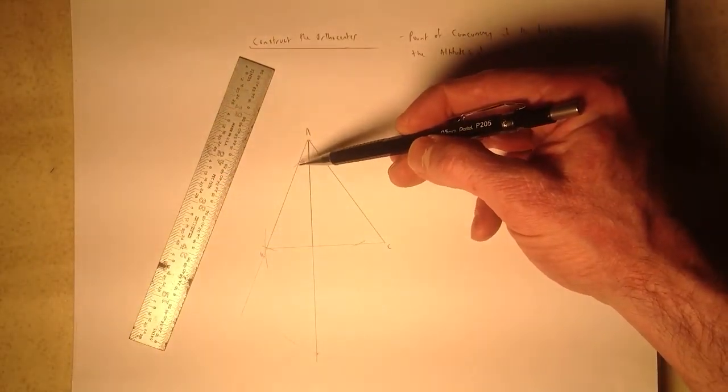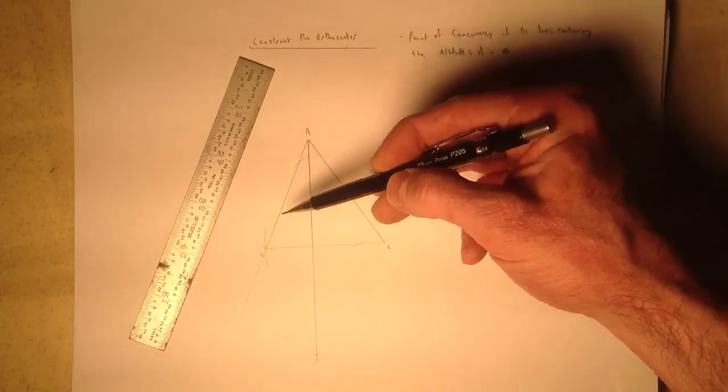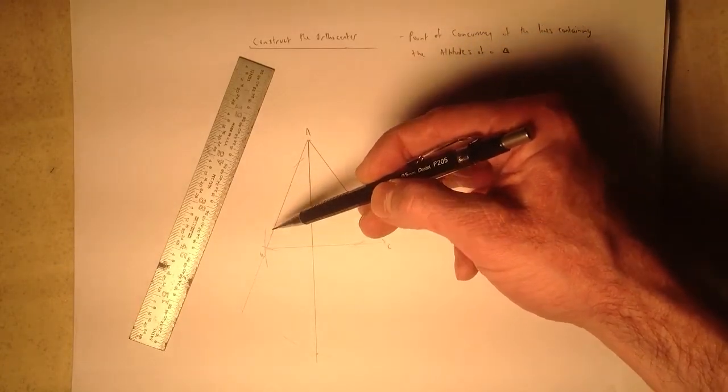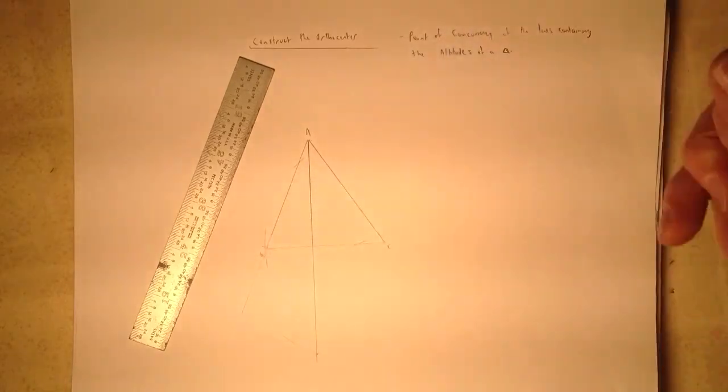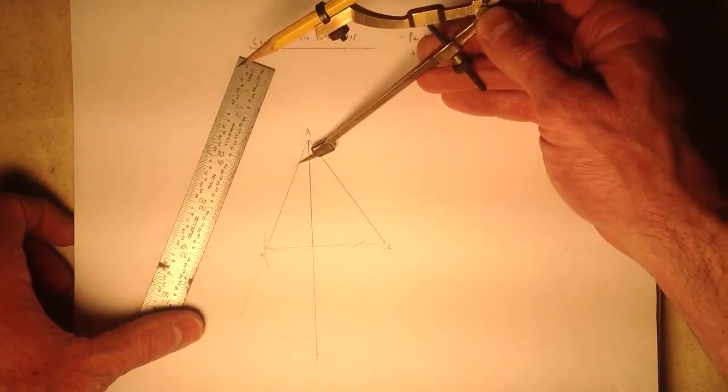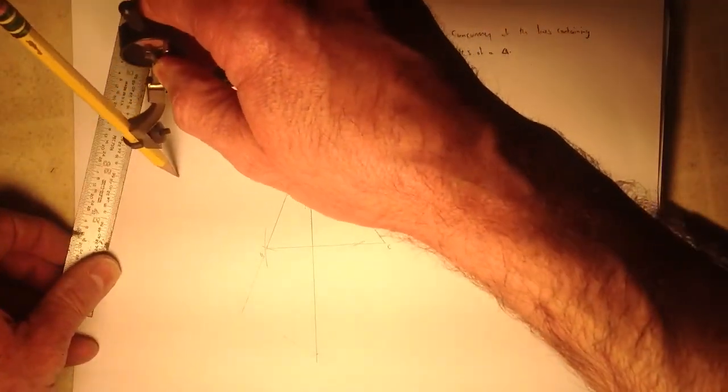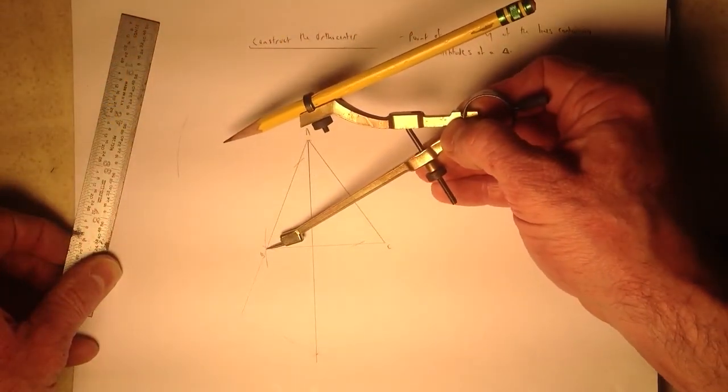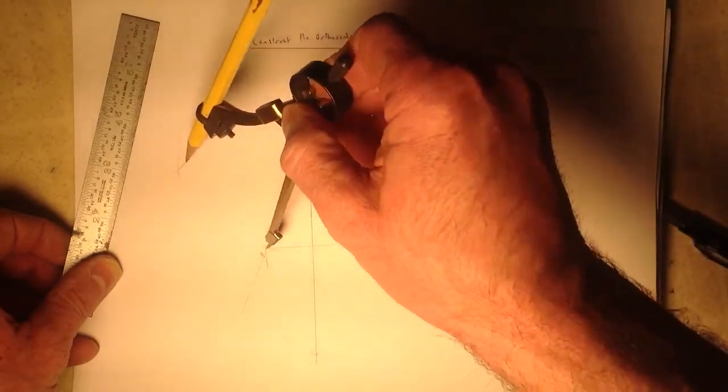Now I have two points of intersection, one here closer to A, and one over here which is closer to B, but is actually outside or past point B. Again, I'll move my compass to one of the intersections and make an arc, and then to the other intersection and make an arc.